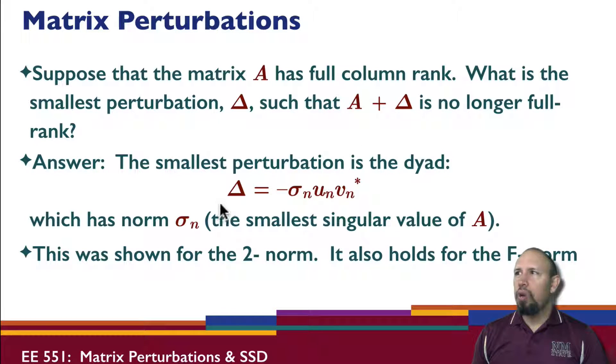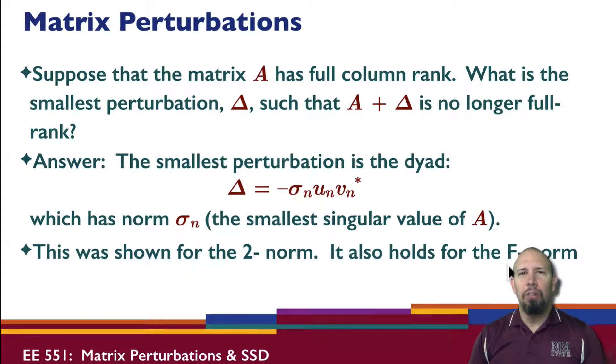We saw that the answer to this question is actually manifold, but a delta that is involved in the proof is a dyad of this form. This has matrix norm sigma n. It is the smallest singular value of A. We saw this problem if we consider the two-norm of the system. The same approach holds if we use the F-norm of the system. We talked about the Frobenius norm last time.